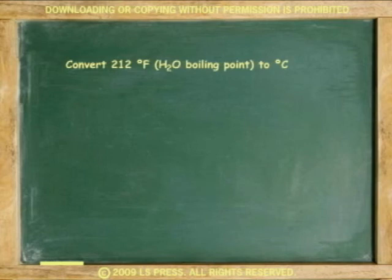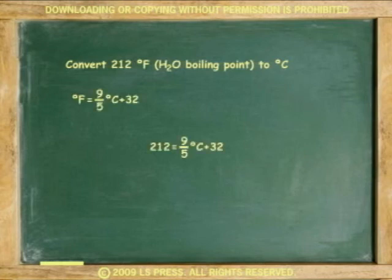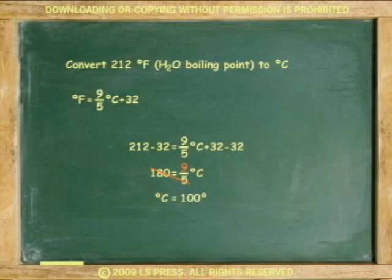For the second example, convert the boiling point of water, 212 degrees Fahrenheit, to degrees Celsius. 212 equals 9 over 5 times C plus 32. Subtract 32 from both sides. Cross multiply and divide by 9. C equals 100 degrees Celsius.